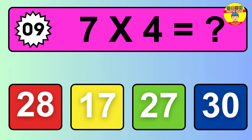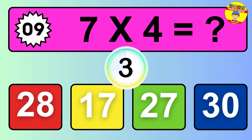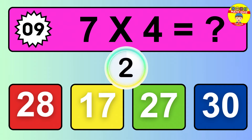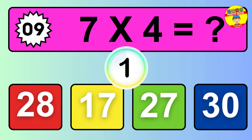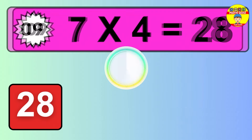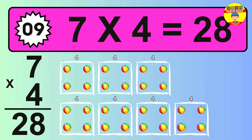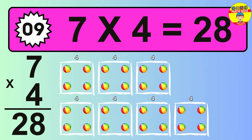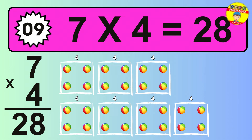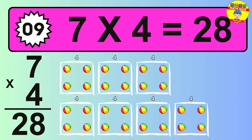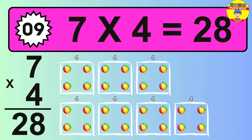Question 9. 7 times 4 equals what? The answer is 7 times 4 is 28. To calculate, we have 7 groups with 4 balls each one. So, how many balls do we have? 28 balls.